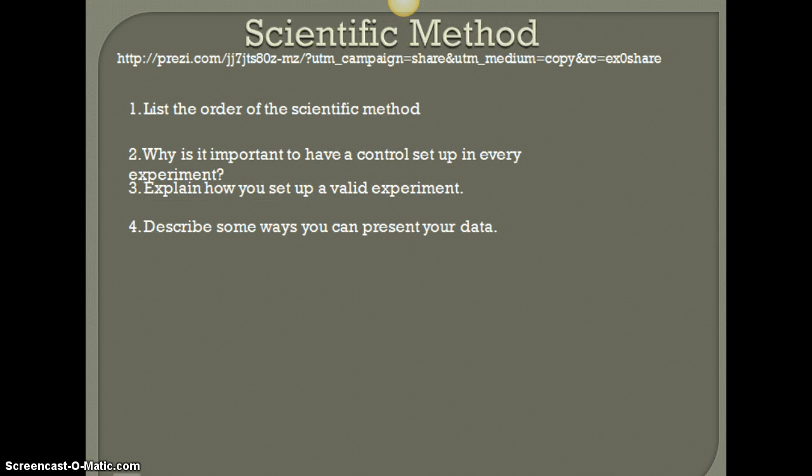What we're going to be covering today is the scientific method. And these are four main things that you want to be able to do out of our scientific method discussion today: list the order of the scientific method, why is it important to have a control set up in every experiment, explain how you set up a valid experiment, and describe some ways you can present your data.